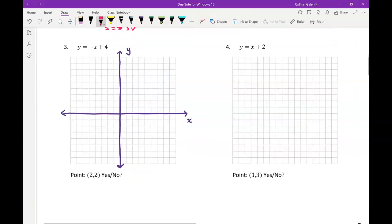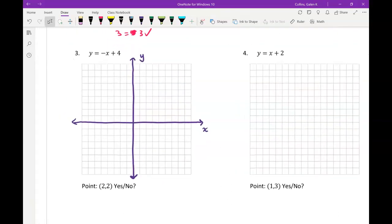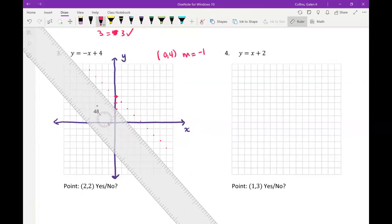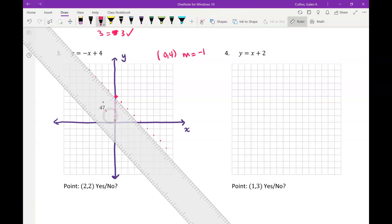I'm going to do these next ones a little bit faster. So in number 3, we've got a y-intercept of 0, 4, and a slope of negative 1. So 1, 2, 3, 4, there's my y-intercept. If my slope is negative 1, that means I'm going down 1 to the right one, or I could go up 1 backwards to the left one.